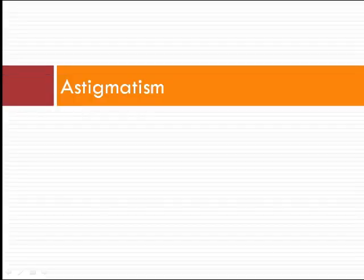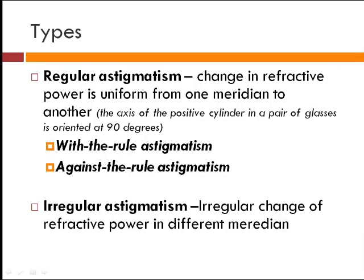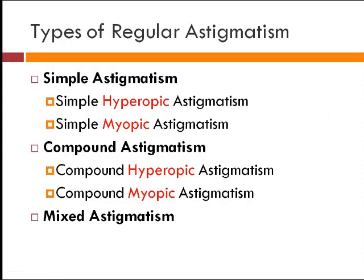What is astigmatism? It is the effect of an optical system in which light rays do not fall on a single point and form two different images, leading to formation of Sturm's conoid. It can be divided into regular or irregular astigmatism. Regular astigmatism is a uniform change in refractive power from one meridian to another — further classified as with-the-rule and against-the-rule astigmatism. With-the-rule means the vertical power of the cornea is slightly more than horizontal, present in over 90 percent of the population. In against-the-rule astigmatism, the horizontal power is more than vertical.